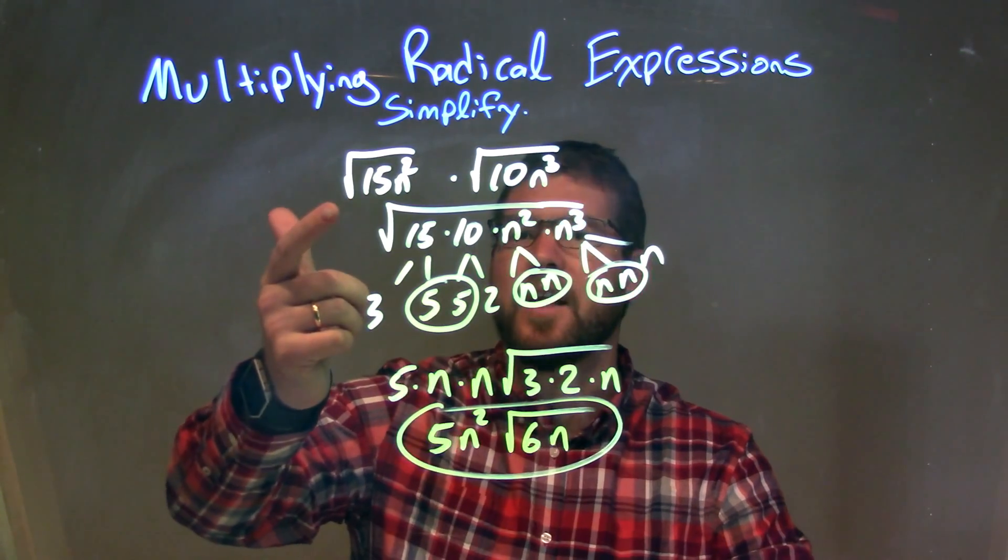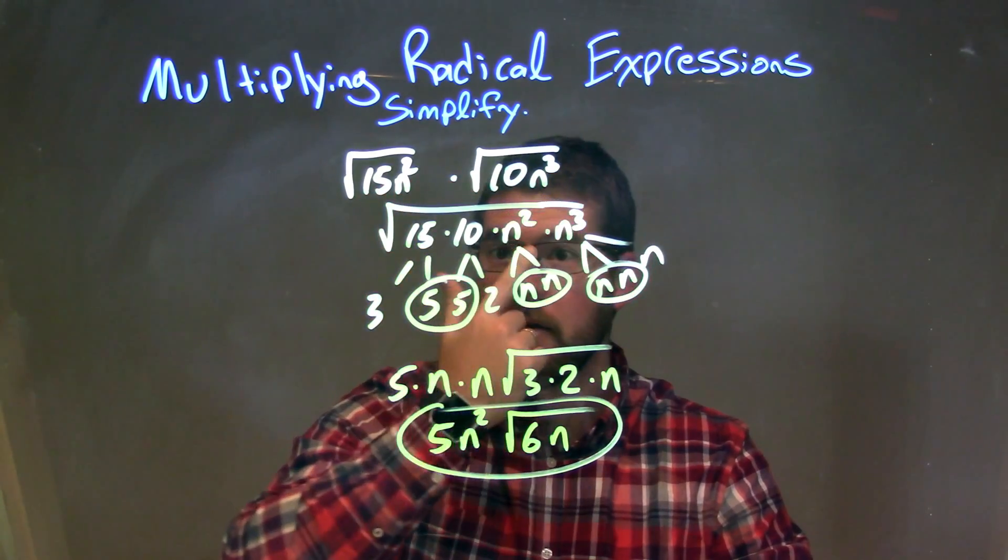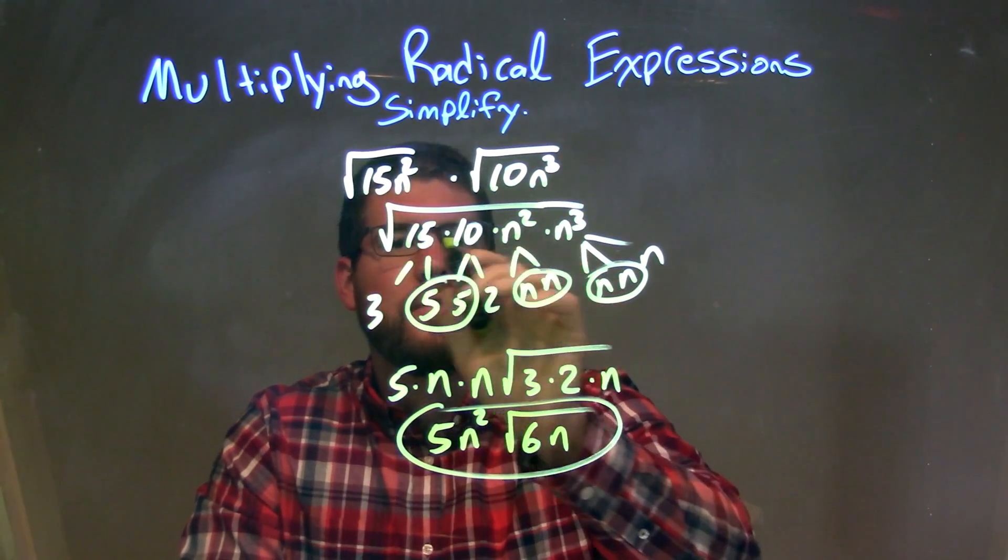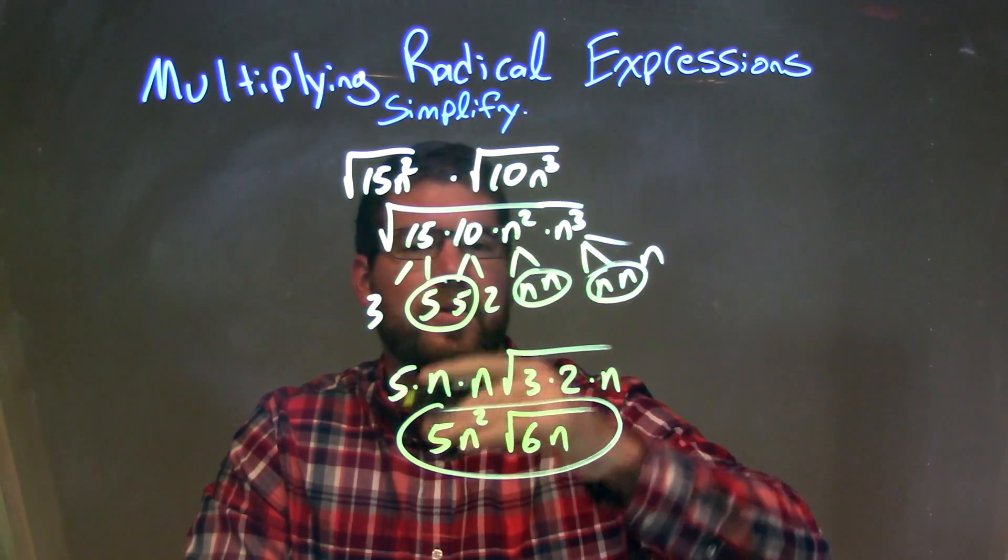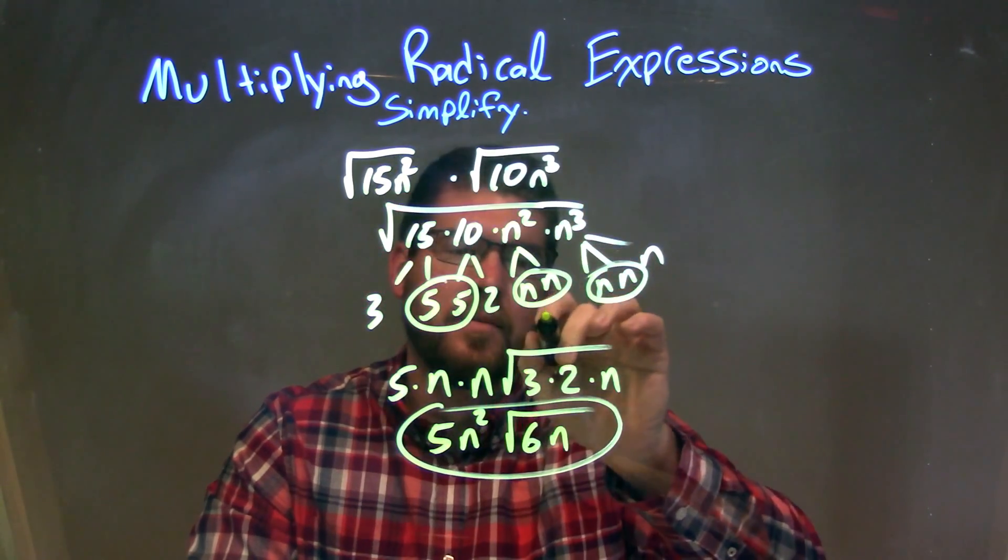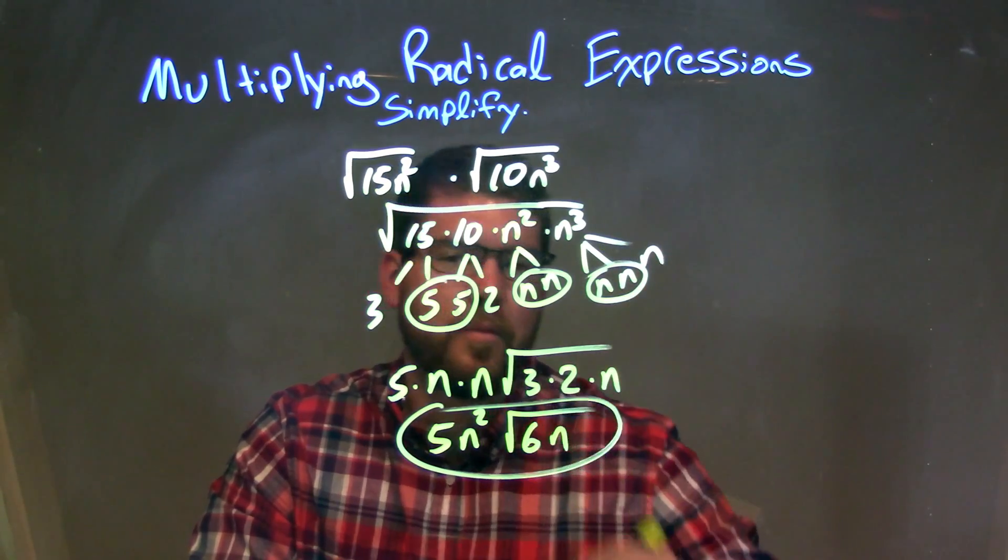So let's recap. We have the square root of 15n squared times the square root of 10n to the third. We can combine this under one big square root, so the square root of 15 times 10 times n squared times n to the third. Then we broke them down: 15 was 3 times 5, 10 was 5 times 2, n squared was n times n, and n to the third is the 3 n's being multiplied together.